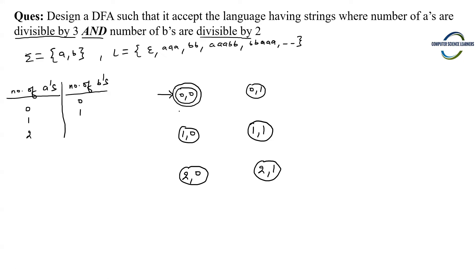Now let us complete the transitions. We need a transition from every state for every possible symbol. From state (0,0), if 'a' comes, the number of a's increases to 1, so we go to (1,0). From (1,0) on 'a', number of a's becomes 2, so we go to (2,0). From (2,0) on 'a', number of a's becomes 3, and 3 divided by 3 gives remainder 0, so we go back to (0,0).